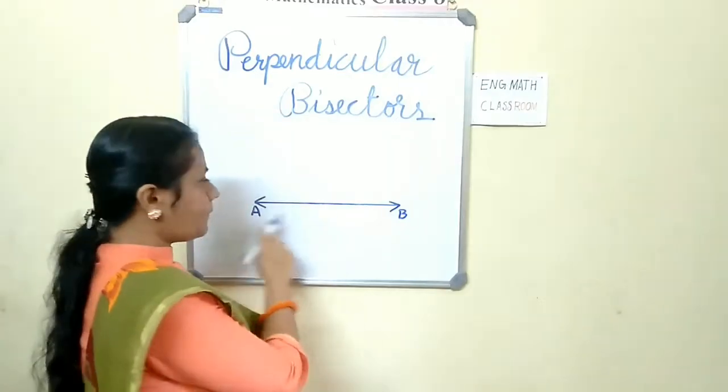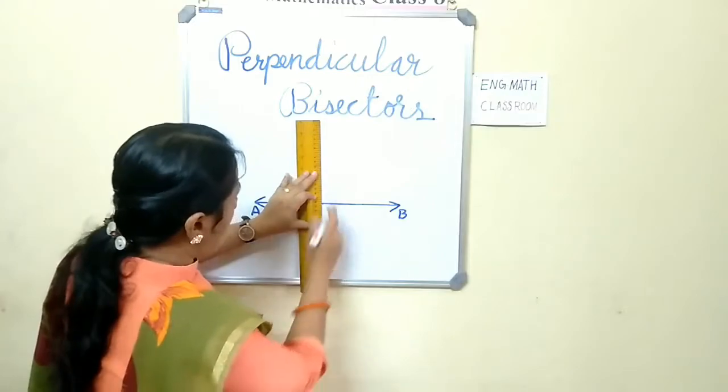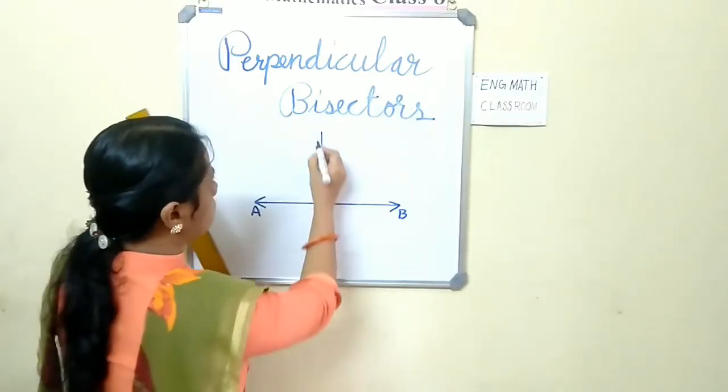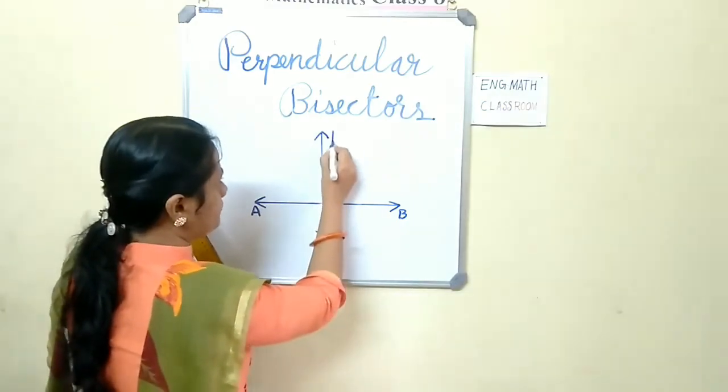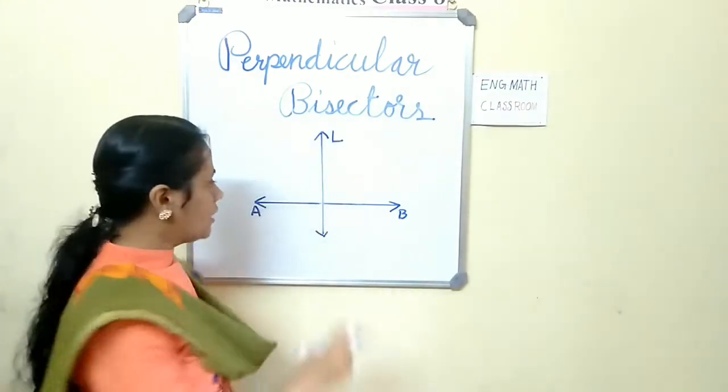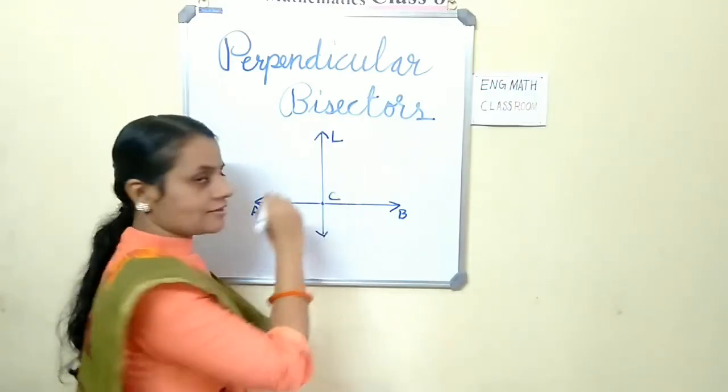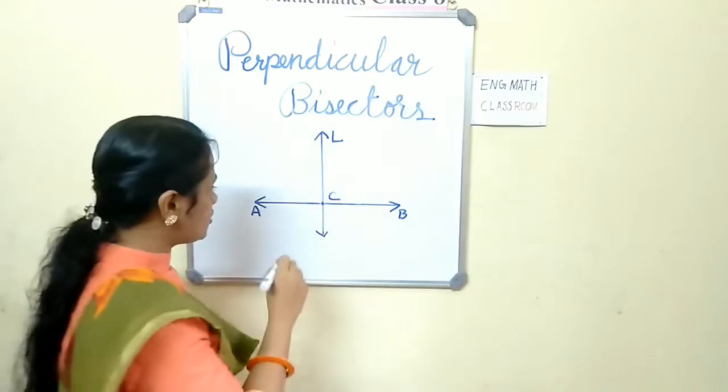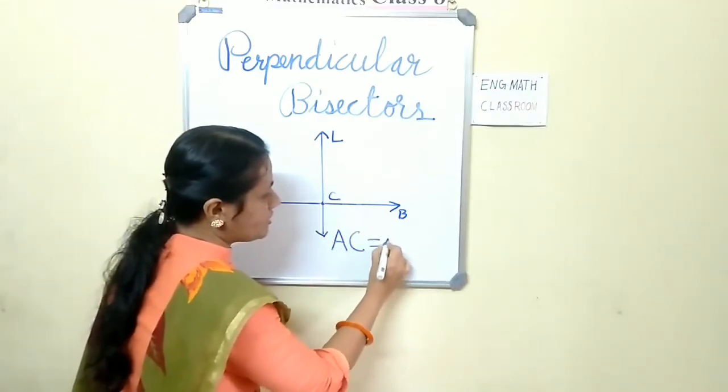That is, AB is a line. Now, another line, line L. These two lines meet at C such that AC equals BC.